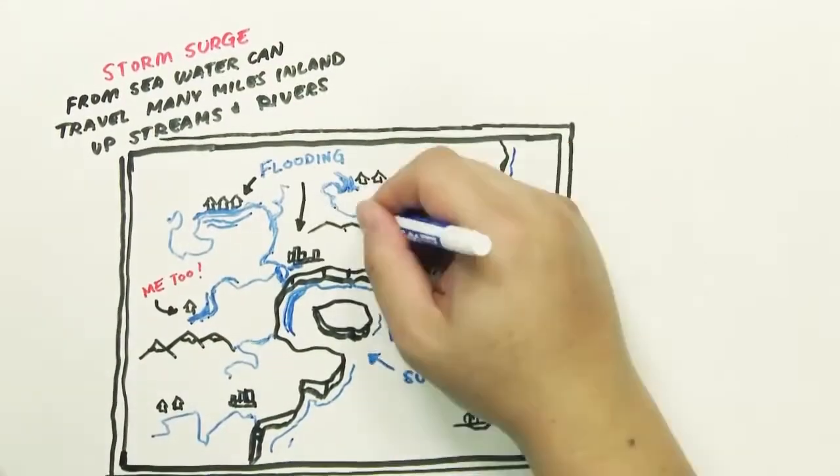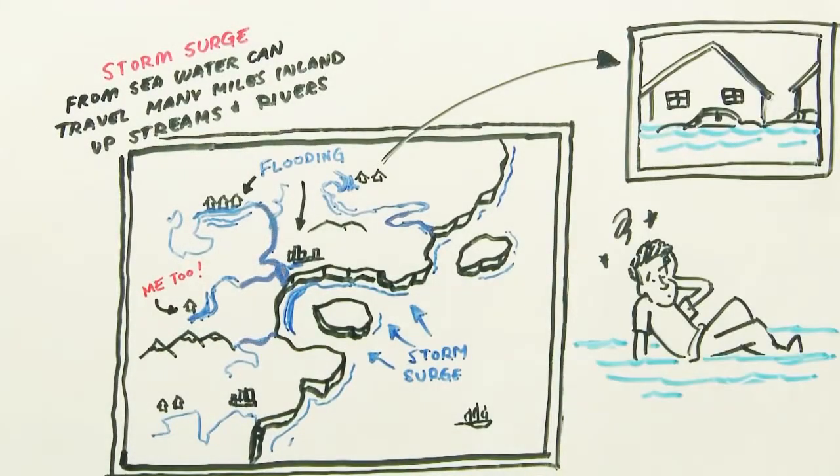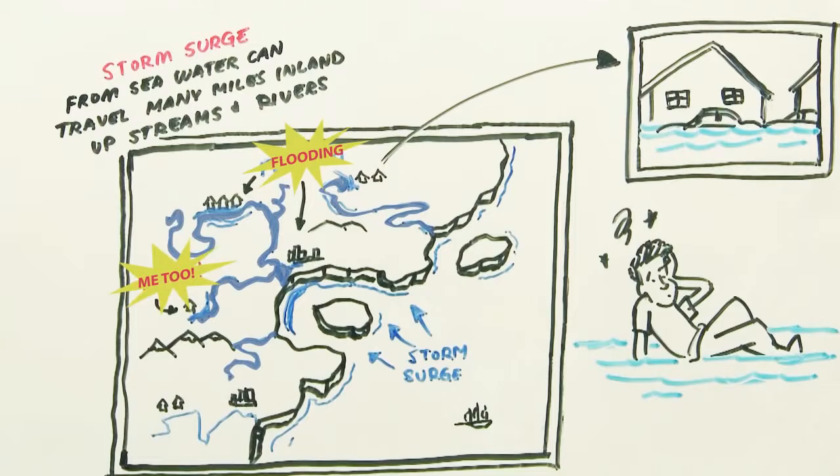Not limited to coastal properties, storm surges from seawater traveling up streams and rivers can flood inland homes too.